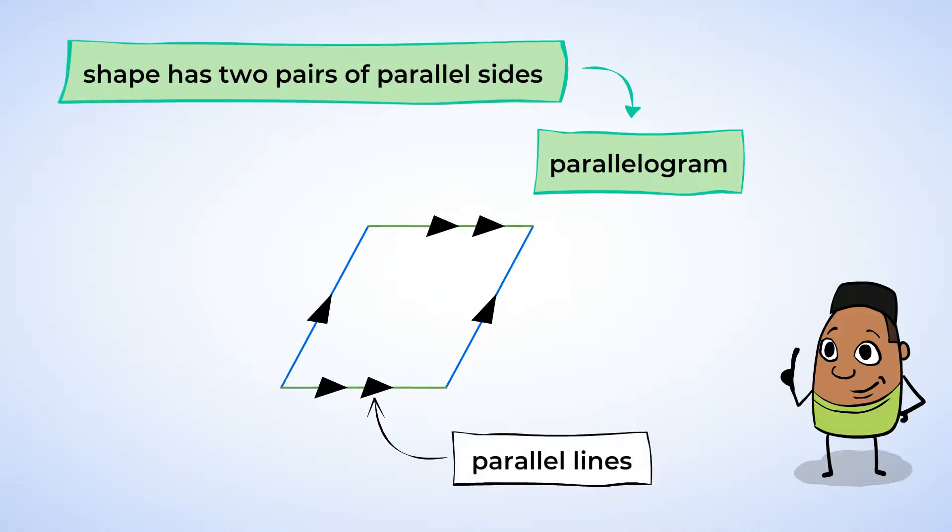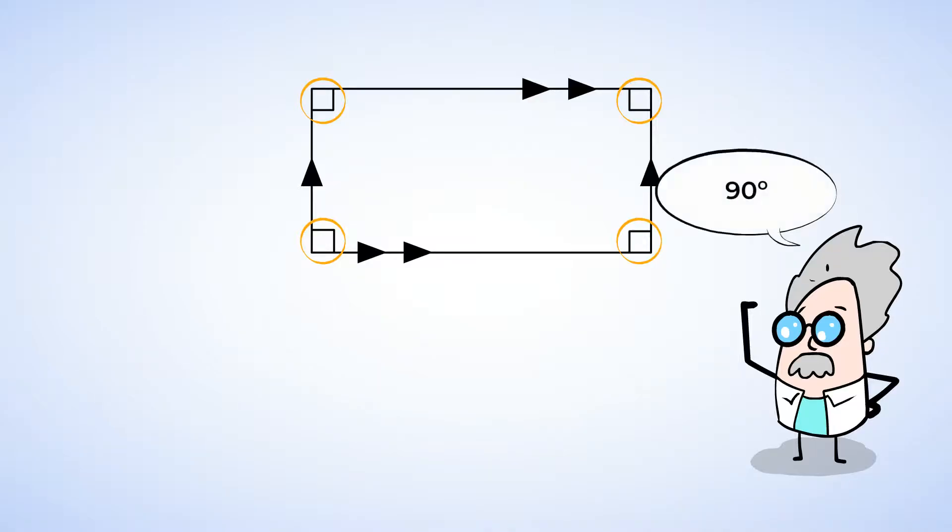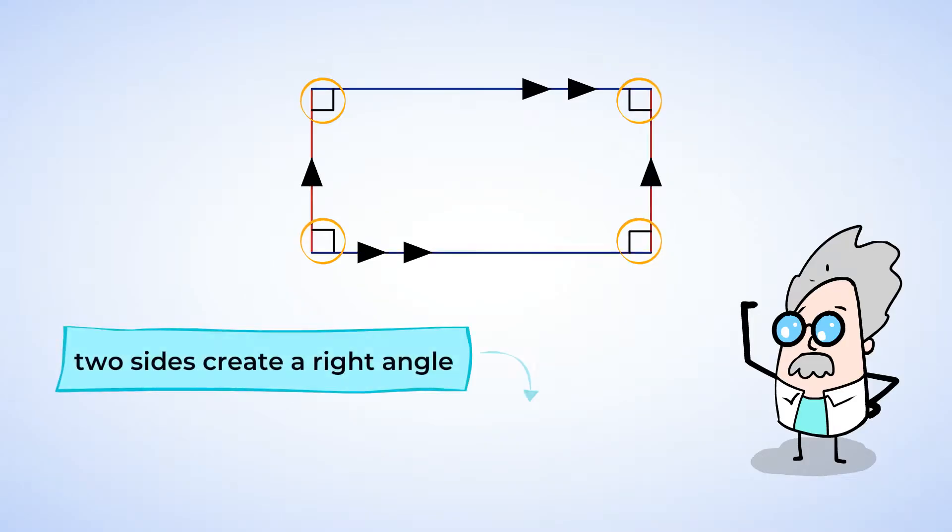But what if we changed the angles to be right angles? Now we have a rectangle. The box symbol is in each of the corners because rectangles have 90 degree angles. Since two sides create a right angle, you can also say that those sides are perpendicular.